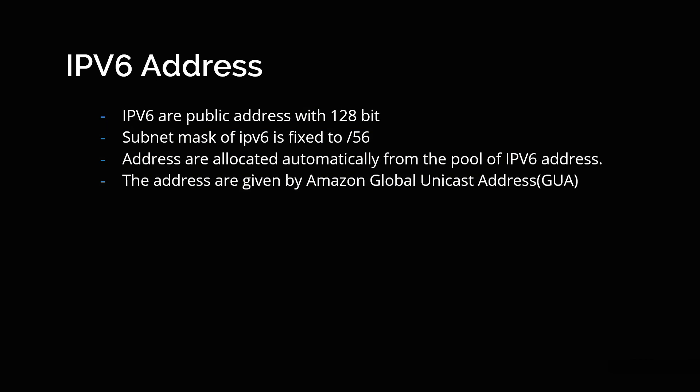The next type of IP address is IPv6. IPv6 is up to 128 bits. In AWS, IPv6 is fixed to slash 56 and cannot go beyond that. The addresses are allocated automatically from a pool of IPv6 addresses and are given by Amazon's global unicast address pool. We mostly use IPv4 addresses, but since the number of devices is increasing rapidly — especially with IoT devices — IPv4 addresses are not enough. That is why we use IPv6 addresses, as it is not possible to assign a unique IP address to all devices within the IPv4 range.